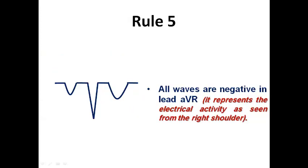Then we come to rule number five and it looks at AVR. And of course all waves should be negative in AVR because as we know that lead AVR, its positive pole is directed at minus 150 degrees. So it is in the right upper quadrant. And so the electrical activity is directed away from AVR, away from its positive pole. And so this explains that P-wave, complex and T-wave should be negative in AVR.